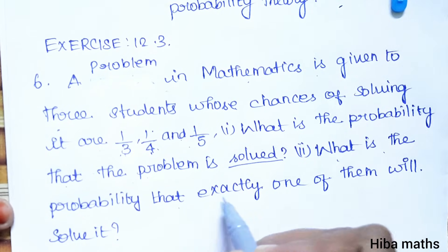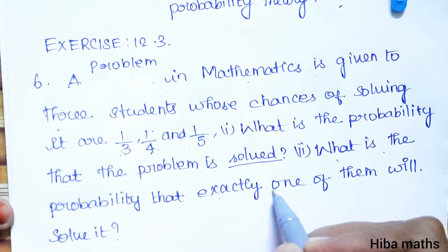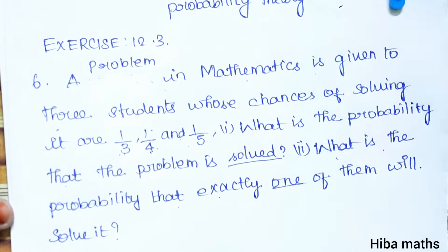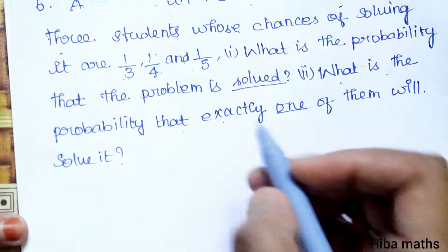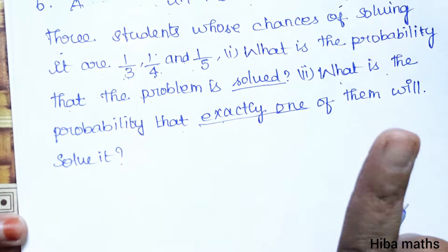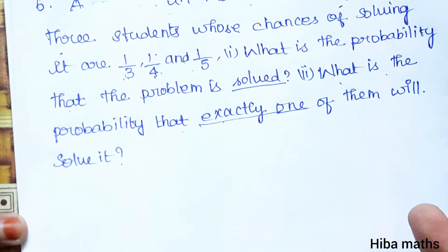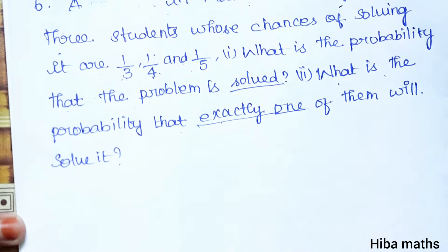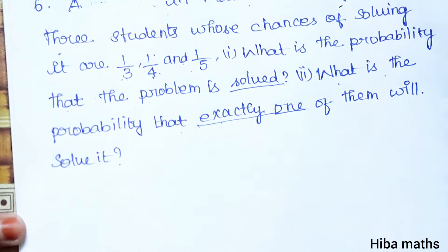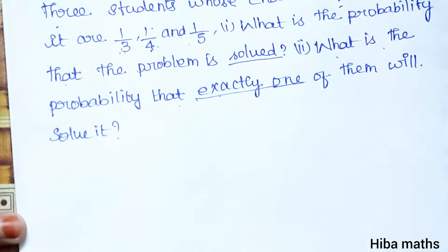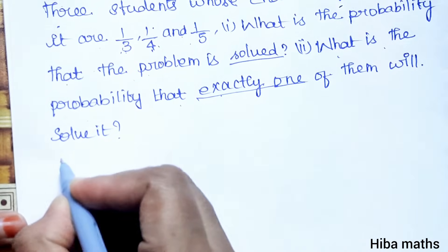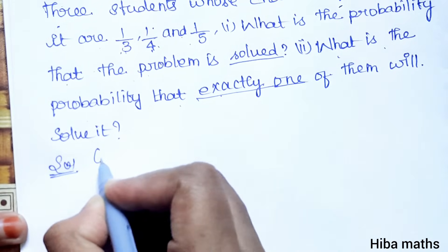What is the probability that exactly one of them will solve it? So exactly one of them can solve it — one is solved and the others are not. Here are three cases: A solves and B does not, B solves and A does not, exactly A solves.